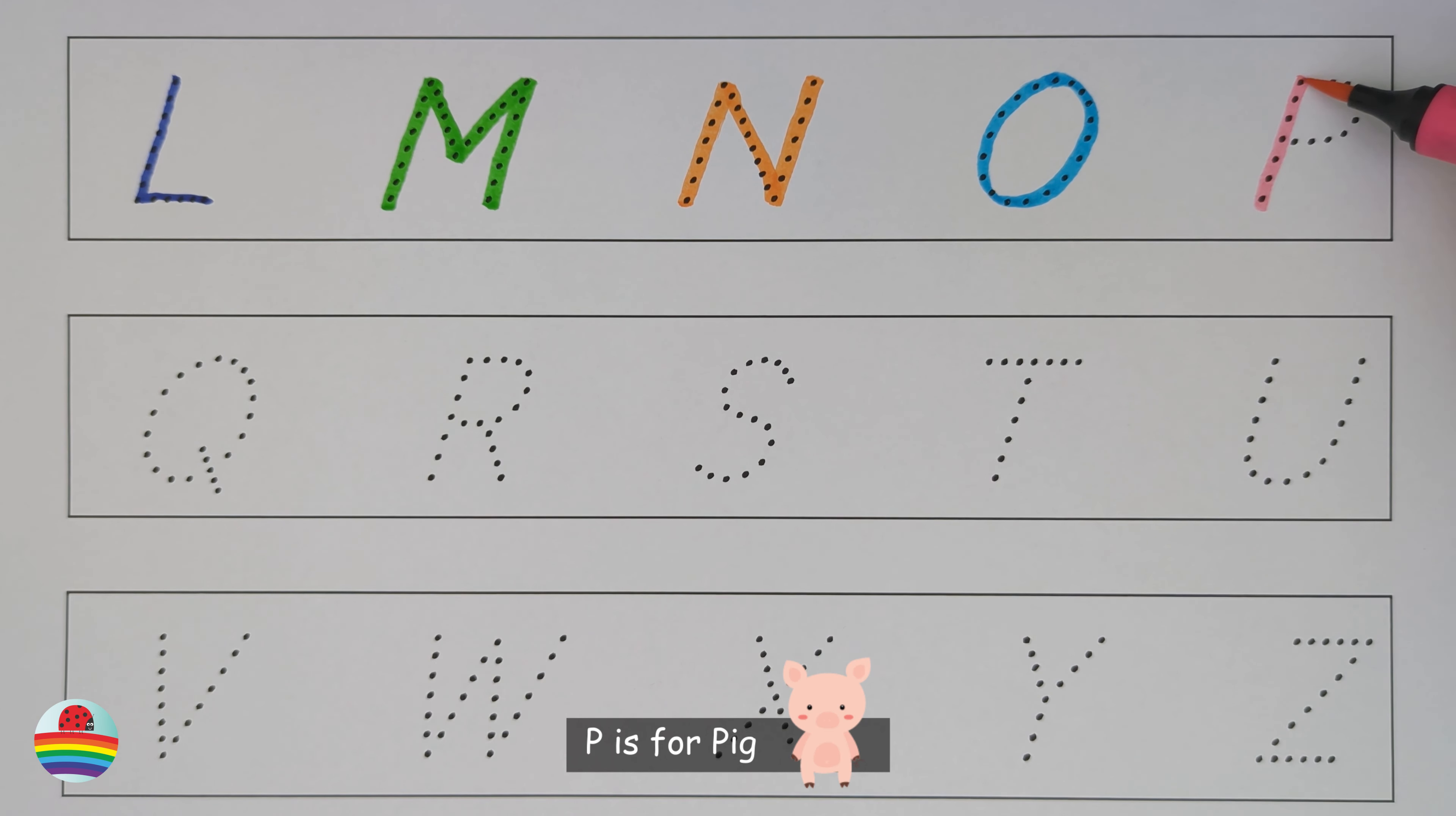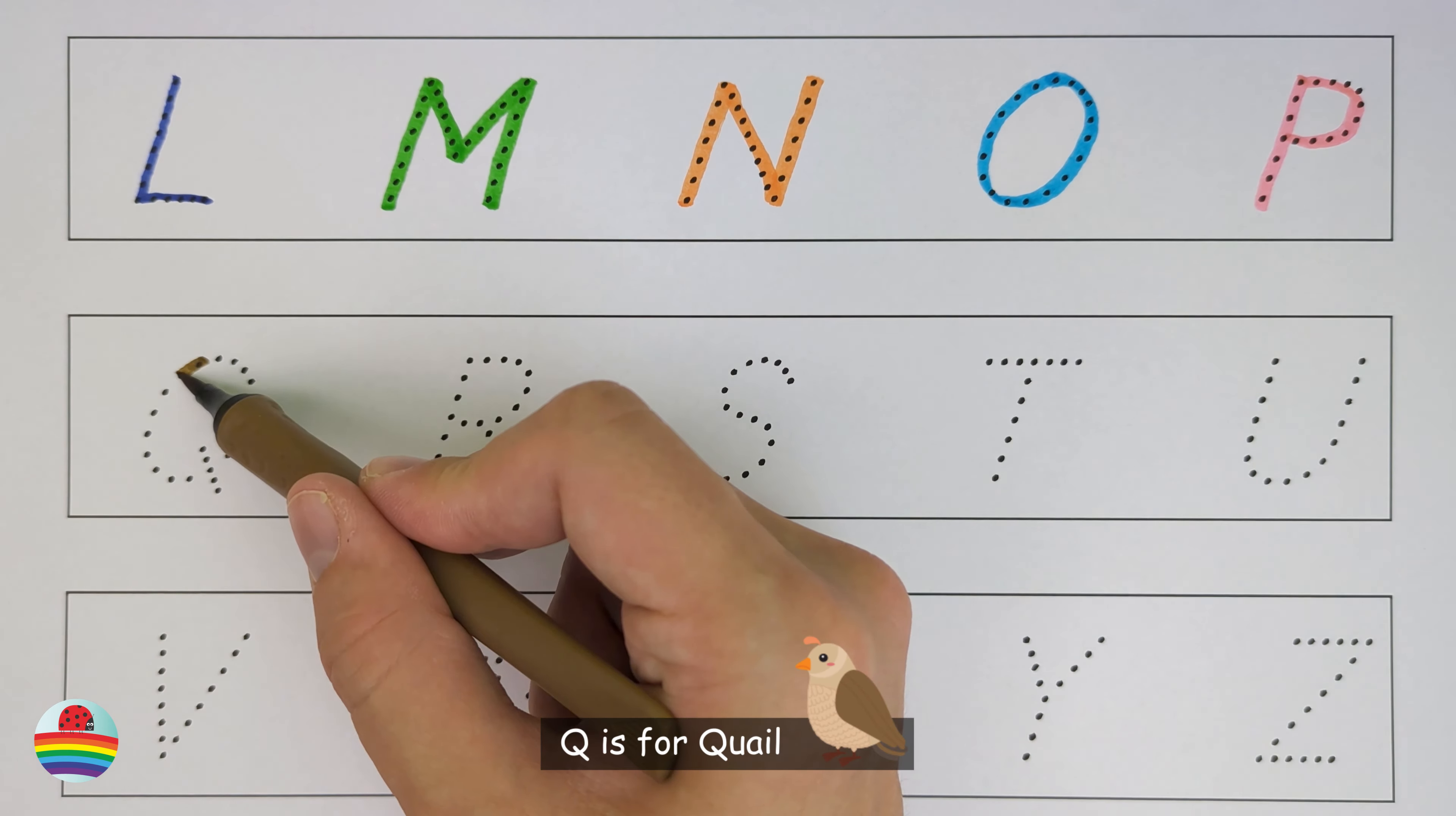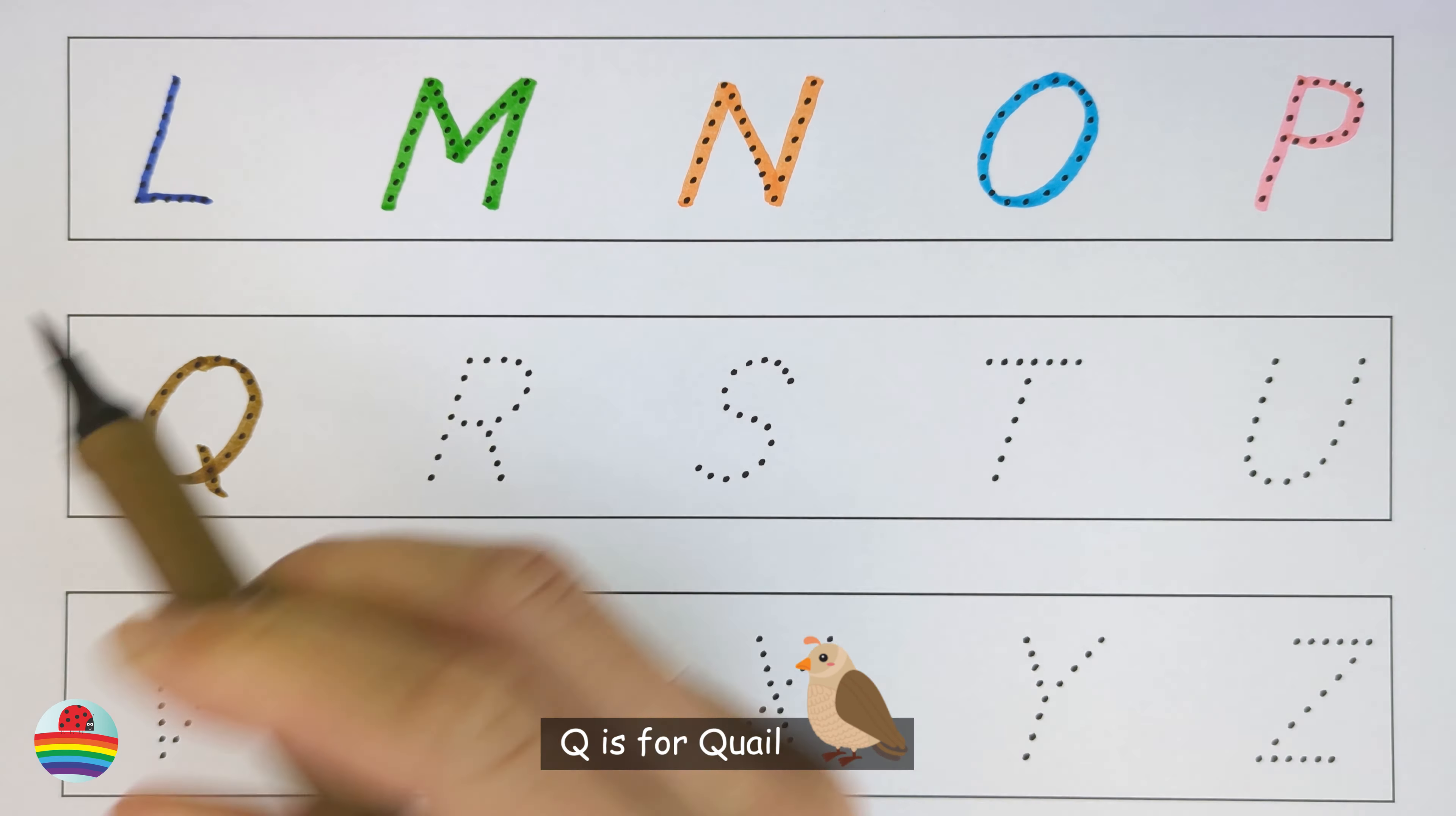P. P is for pig. P. Q. Q is for quail. Q.